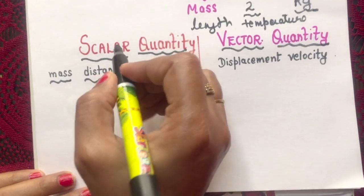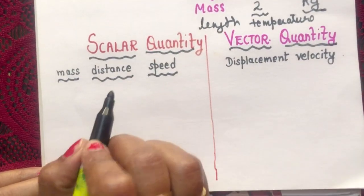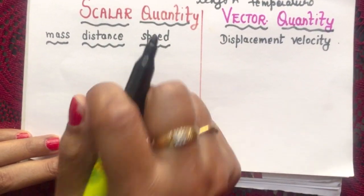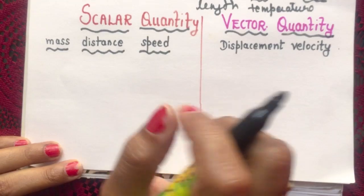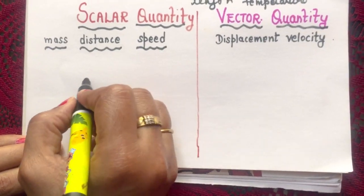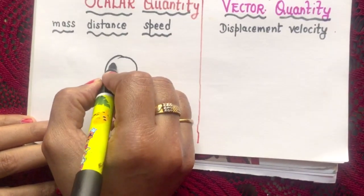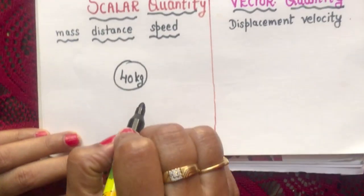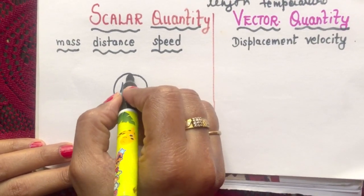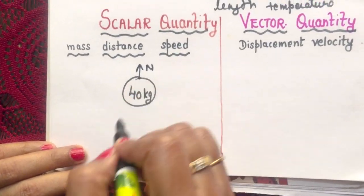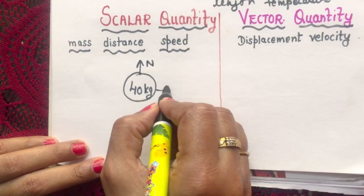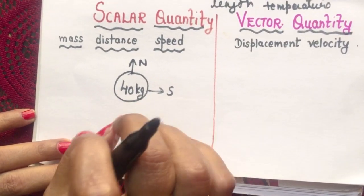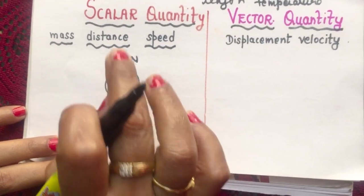Just remember one thing. Scalar quantities are those in which for the description we do not require any kind of direction. For example, if I say mass of an object is 40 kg, this statement is complete in itself. I do not have to say the mass is 40 kg in north direction or south direction. This does not require any kind of description. So mass is a scalar quantity.